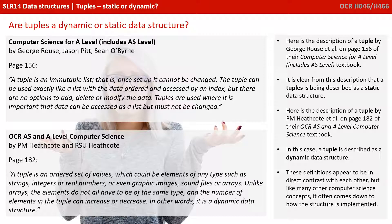A tuple is an ordered set of values, which could be elements of any type such as strings, integers, real numbers, or even graphics, images, sound files, or arrays. Unlike arrays, the elements do not all have to be of the same type. And the number of elements in the tuple can increase or decrease — in other words, it's a dynamic data structure. So with this description, a tuple is described clearly as a dynamic data structure.